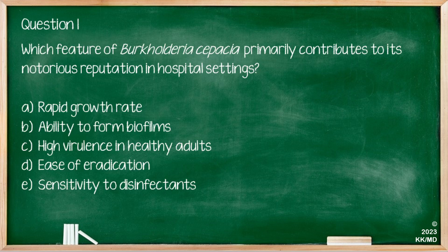Let's do some questions. Which feature of Burkholderia cepacia primarily contributes to its notorious reputation in the hospital setting? A: The rapid growth rate. B: The ability to form biofilm. C: High virulence in healthy adults. D: Ease of eradication. E: Sensitivity to disinfectants. The correct answer is option B — Burkholderia cepacia's unique ability to form biofilms, which unfortunately adds to the challenge and complicates treatment for infected patients.